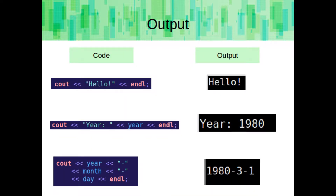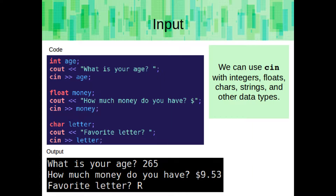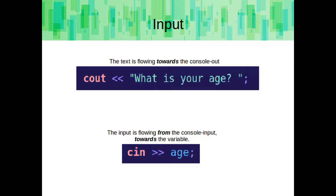Here are some ways we can output data to the console. You can output just a string literal by itself, or put a string with a variable after it so the variable's value will appear after, or keep stringing them together and even put them on other lines. To get input from the user, we can use cin (console in). The stream operator signs after cin point towards the variable and away from cin. We can use cin with integers, floats, characters, strings, and other data types. Remember: text flows towards the console out, while input flows from the console input towards the variable.